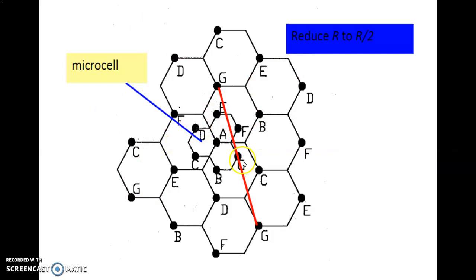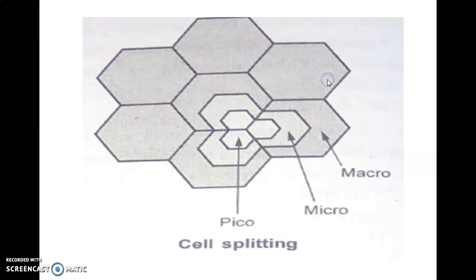You have many number of cells, and here you see this has been split into small cells. These are called micro cells and the area is actually increasing. You have split the cells within that cell itself. Now R will be reduced to R by 2. This is how cell splitting takes place.